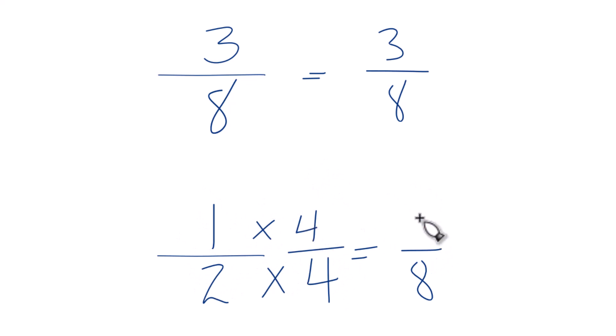One times four, that's four. Four eighths, that's the same thing as one half. They both are equal to 0.5. But now we have eight here and here in the denominator.